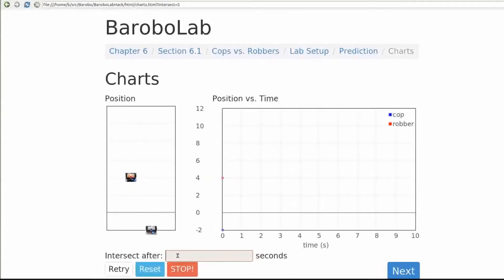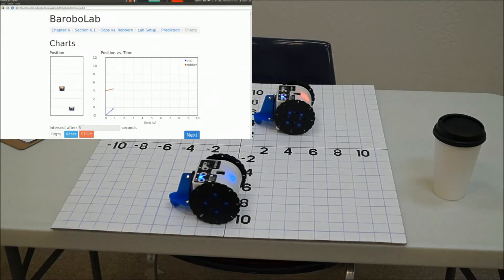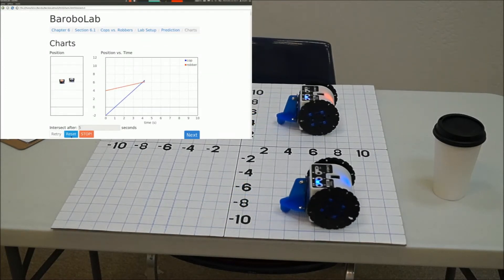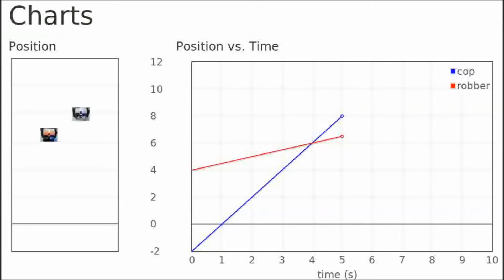Students make a prediction in seconds and the teacher enters a value and pushes go. The robots start moving immediately and match the graph in time and scale. You can see the initial prediction of five seconds overshooting the mark and that it's closer to four seconds.